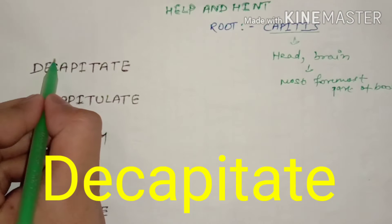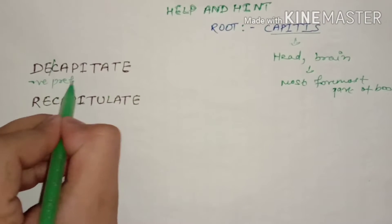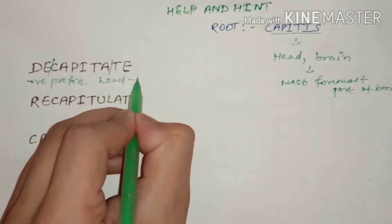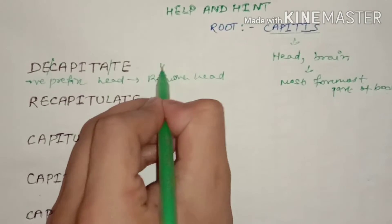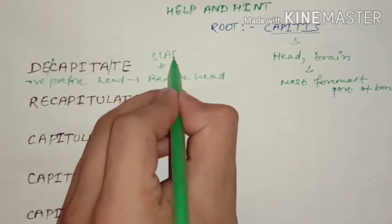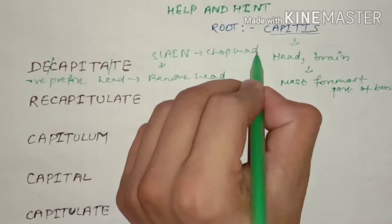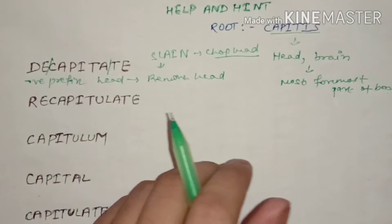The first word is decapitate. De means negative prefix and capit means head. So remove head, you can say slain someone's head, chop head.